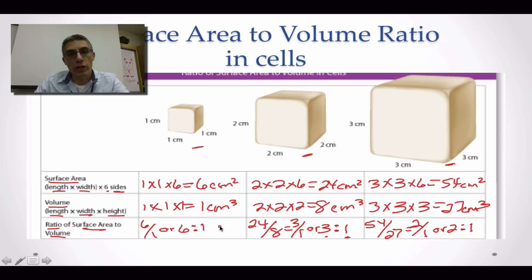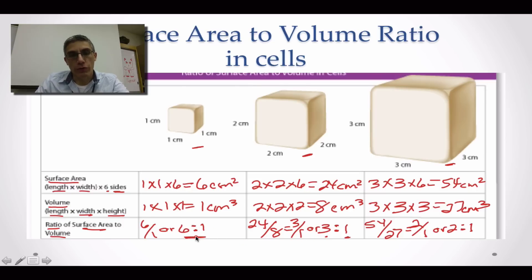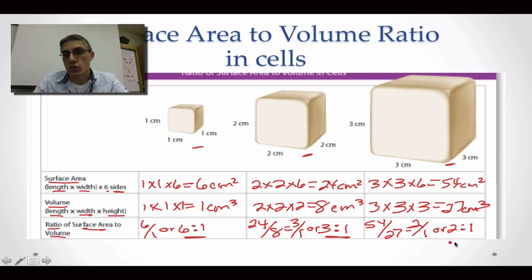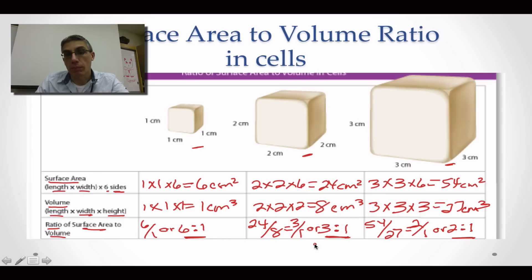What I want you to recognize is that as the cell increased in size, the ratio went from 6 to 1 for the first, to 3 to 1 for the second, to 2 to 1 for the third — the ratio got smaller and smaller. Which means that as the cell increased in size, it became less efficient at the exchange of materials.